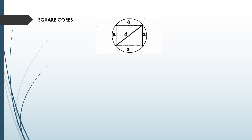This diagram is a simplified diagram of the square core, where this circle represents the winding and the square denotes the core. Here, d is the diameter of the circumscribing circle, and a is the length and width of the square core.